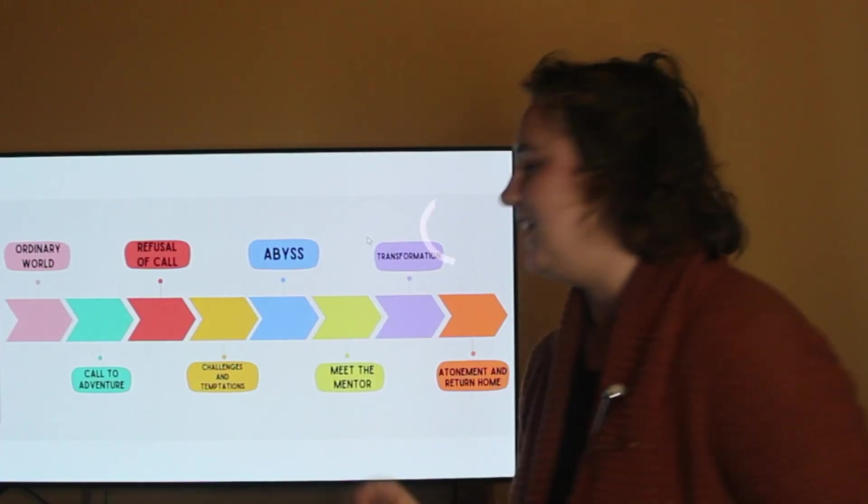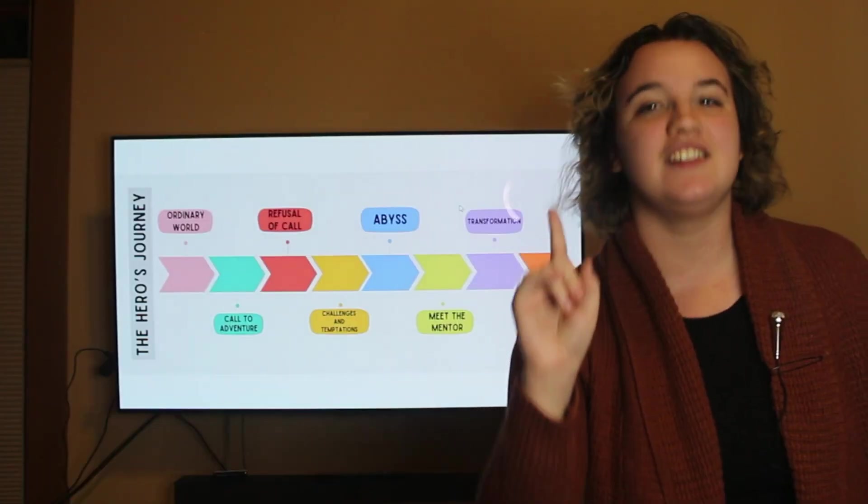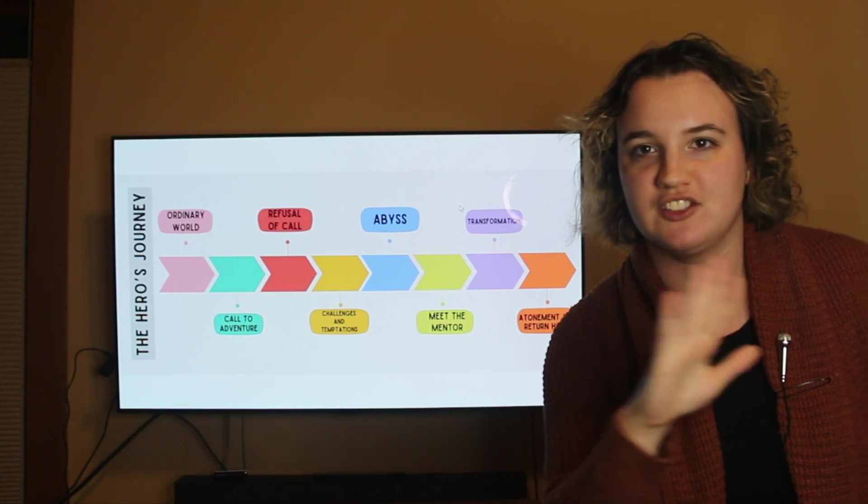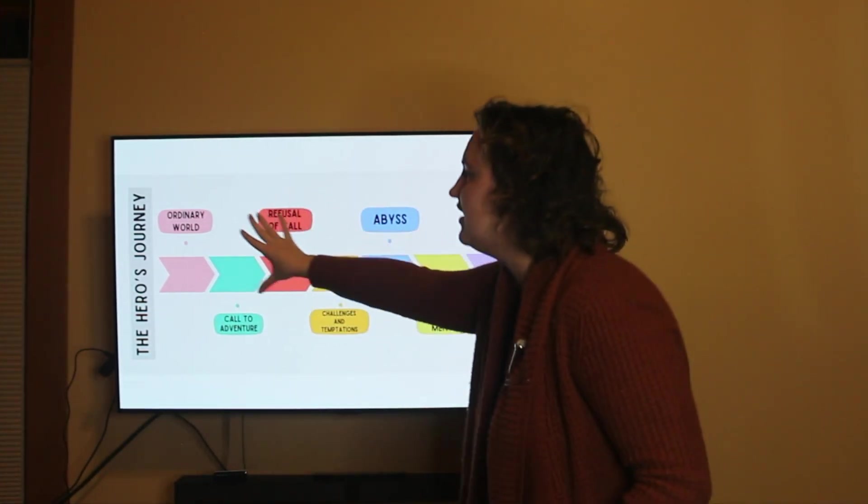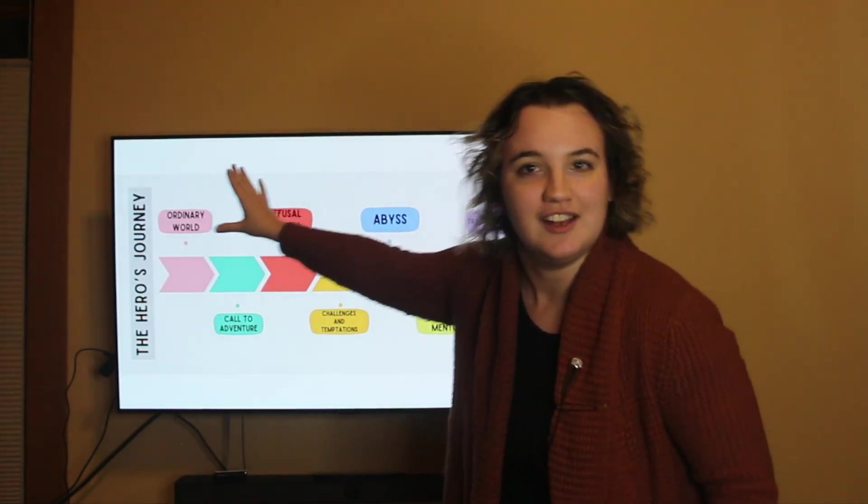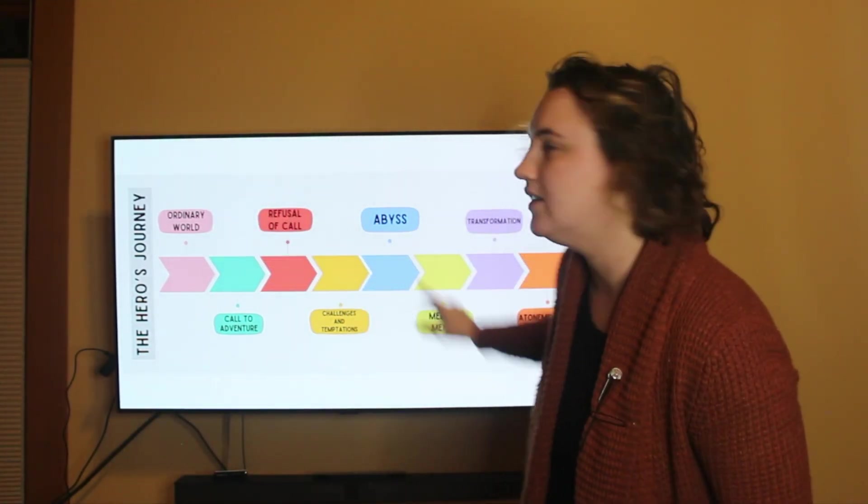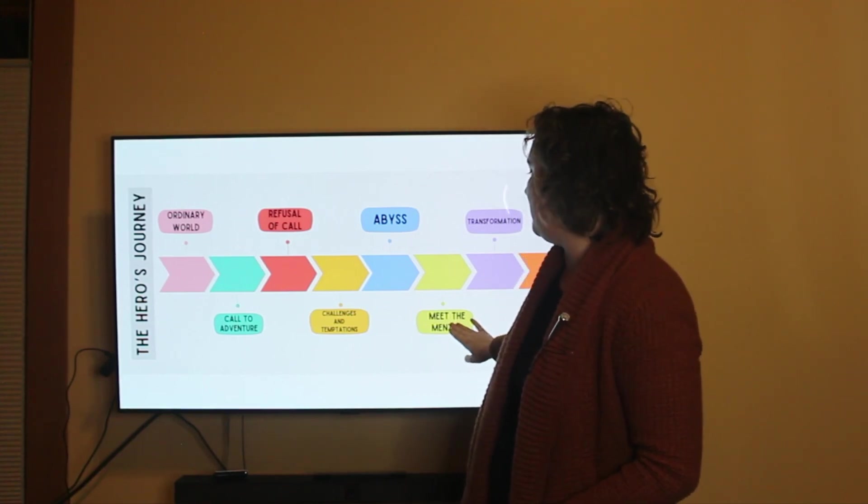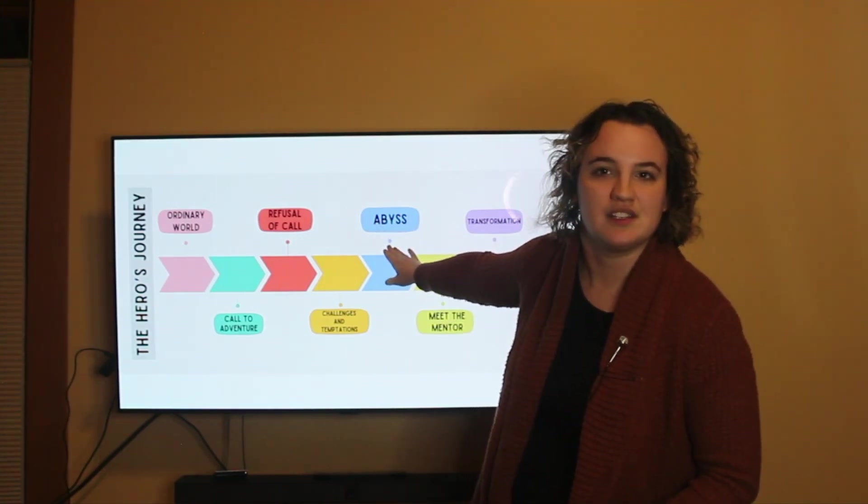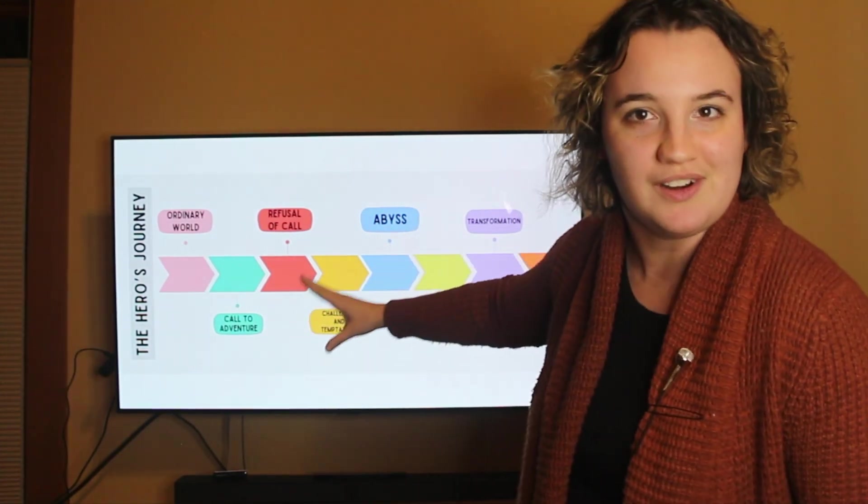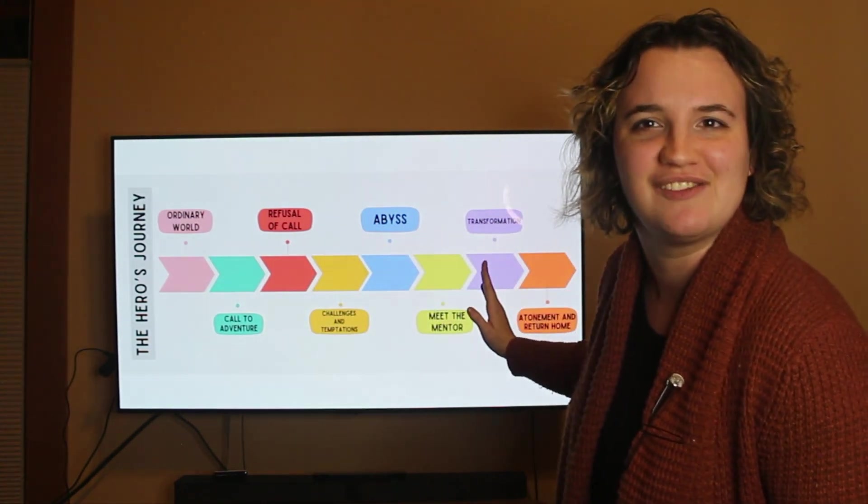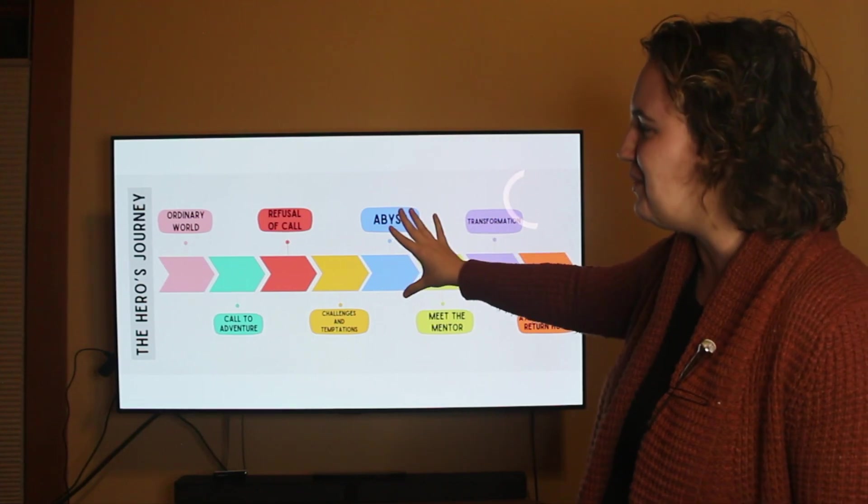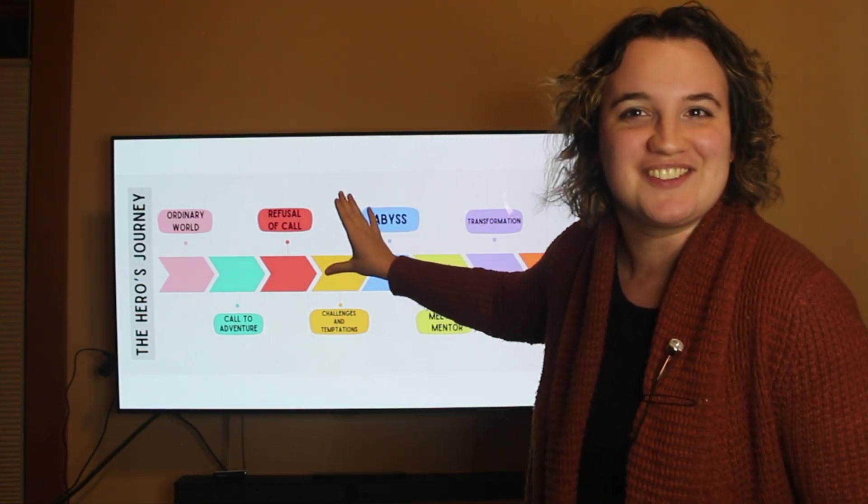Alright, so we have the abyss. We then rise into transformation. The hero becomes a different person than they were at the beginning of the story. And then they have atonement and return home. So this, guys, is exactly what happened to me in 2023. Are you joking? Let's take a look. Okay. There is one slight change, and that's totally okay. Authors have the ability to take this structure and shift it around a little bit, right? So God said, you're not going to meet your mentor till after the abyss moment. Okay, but don't worry. It's all in there. It's just moved slightly over. So let's walk you through my hero's journey.